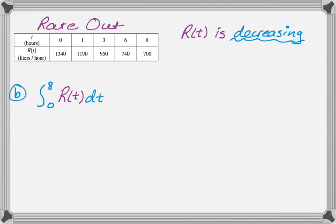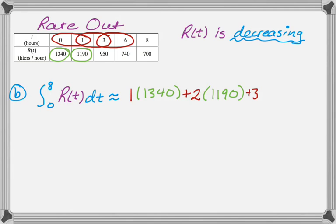Then it's an estimate, so it's approximately equal to. And then a left Riemann sum. What I like to do is make it really clear in the table what I'm doing. From 0 to 1 is 1, and then the left end point of that would be 1340. So 1 times 1340 plus 1 to 3 is 2, and then we're going to use 1190. And then 3 to 6 is 3, and use 950. And then 6 to 8 is 2, and then we'll use 740. So we get this.